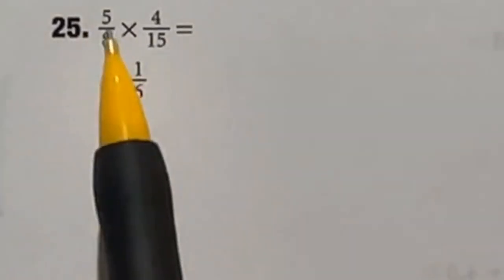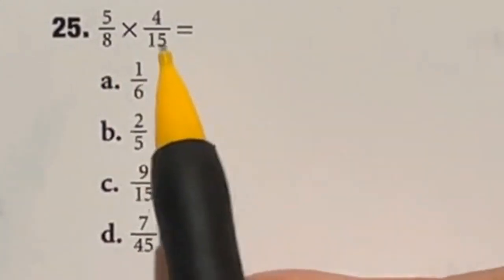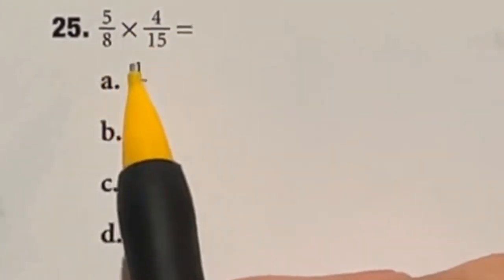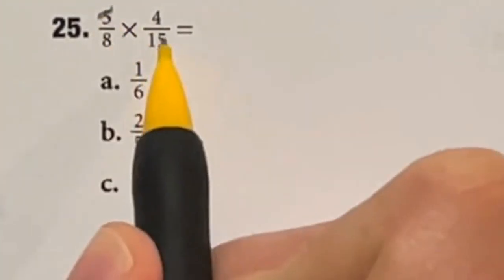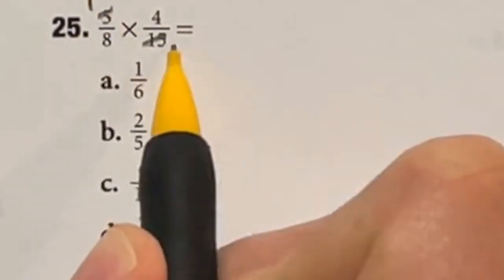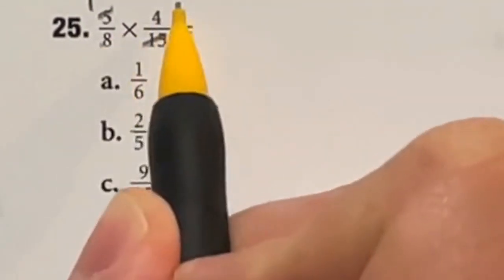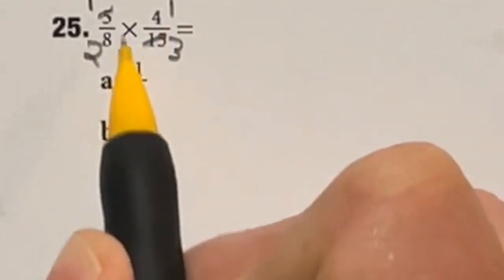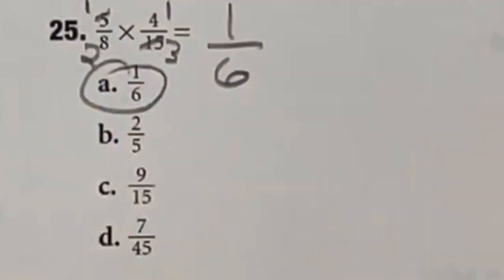So when you're multiplying fractions you can actually just multiply straight across but you can also cancel out with things to reduce these fractions to make that multiplication easier. For example in this case we have five and fifteen well if I divide both of those by five we get one over three. Same thing here four and eight if I divide both of those by four I get one and two. So now if I multiply straight across one times one is one two times three is six. So our final answer is A.